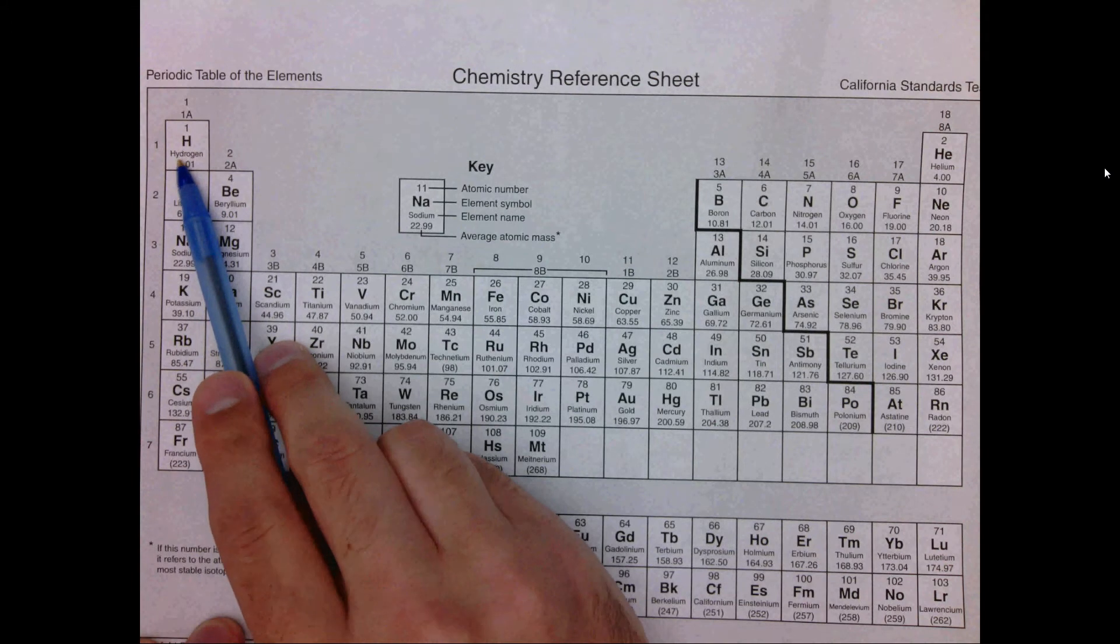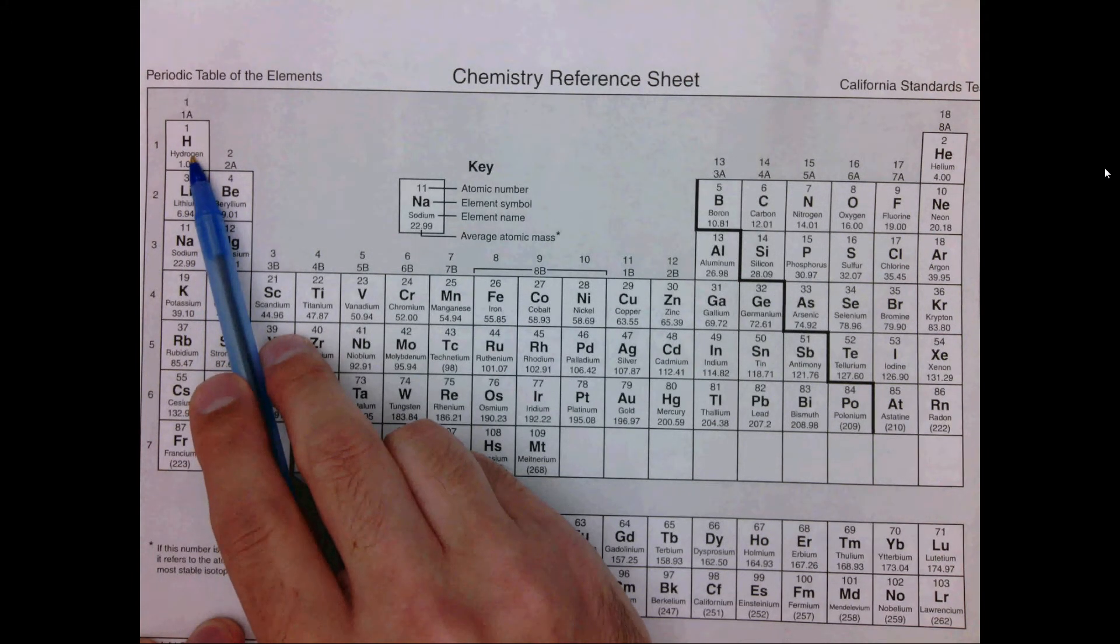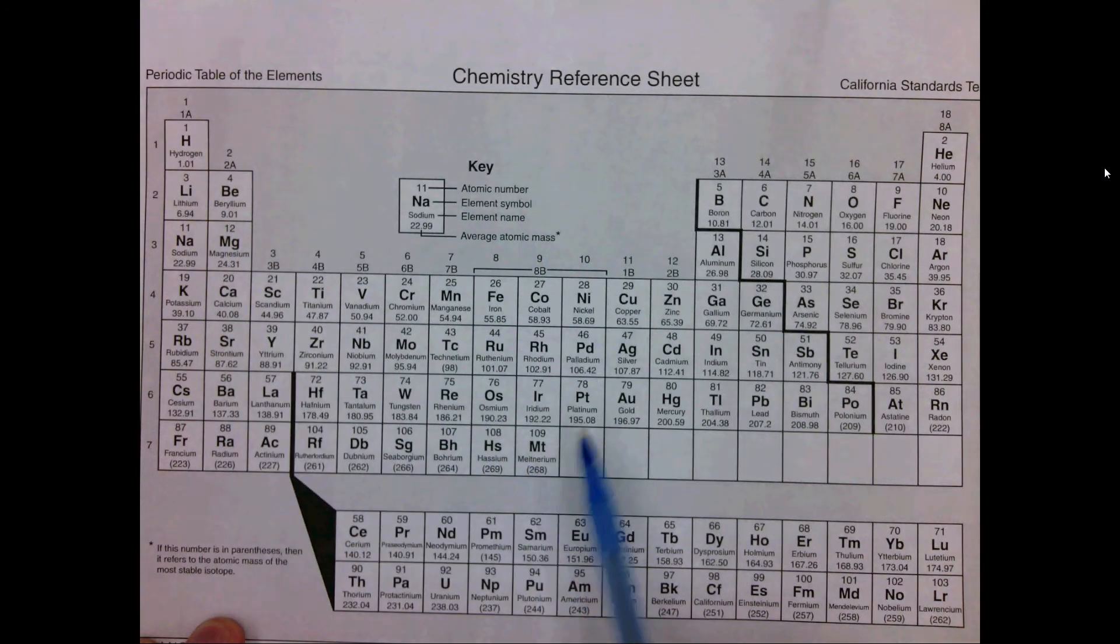Remember, ionic compounds, generally speaking, occur between a metal and one or more non-metals. I should note there are positively charged polyatomic ions which can form ionic compounds, but I don't believe any of those are on ALEKS, and you'll learn about those later.